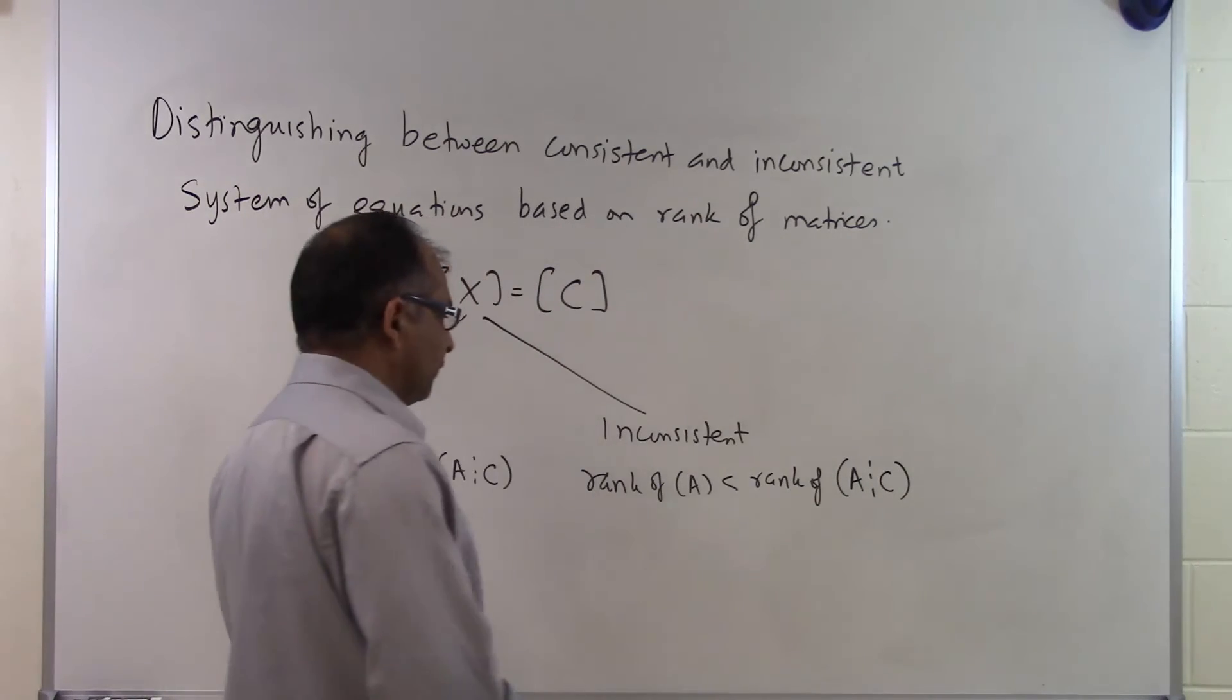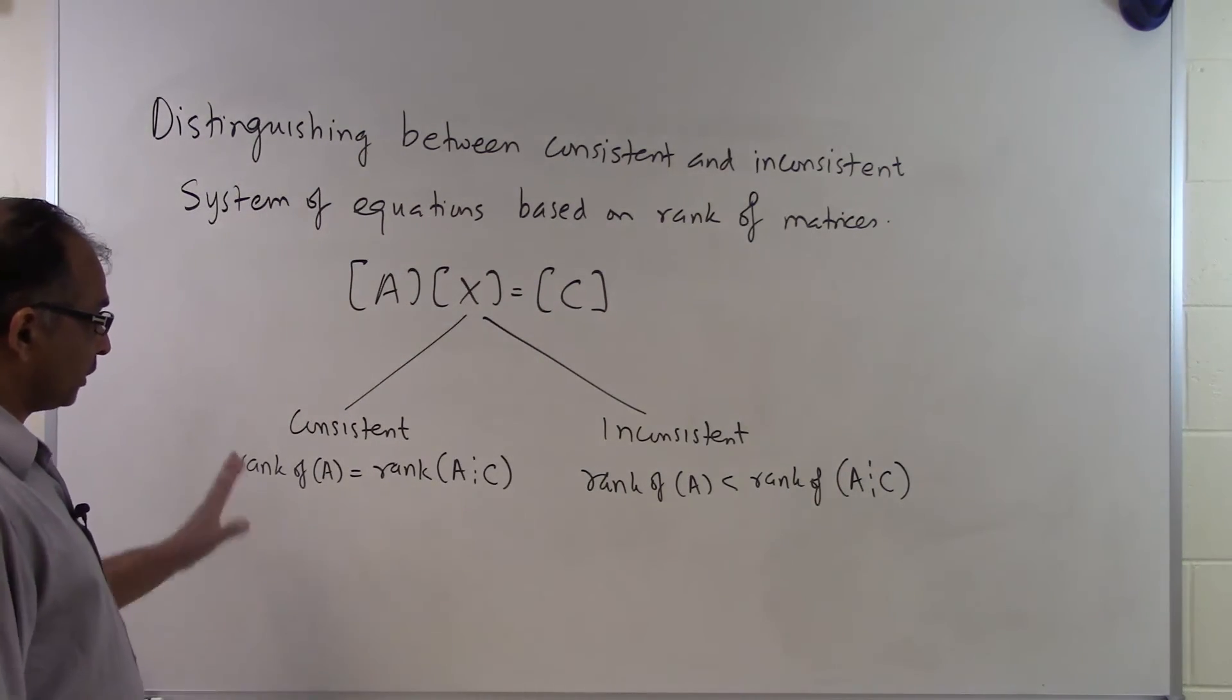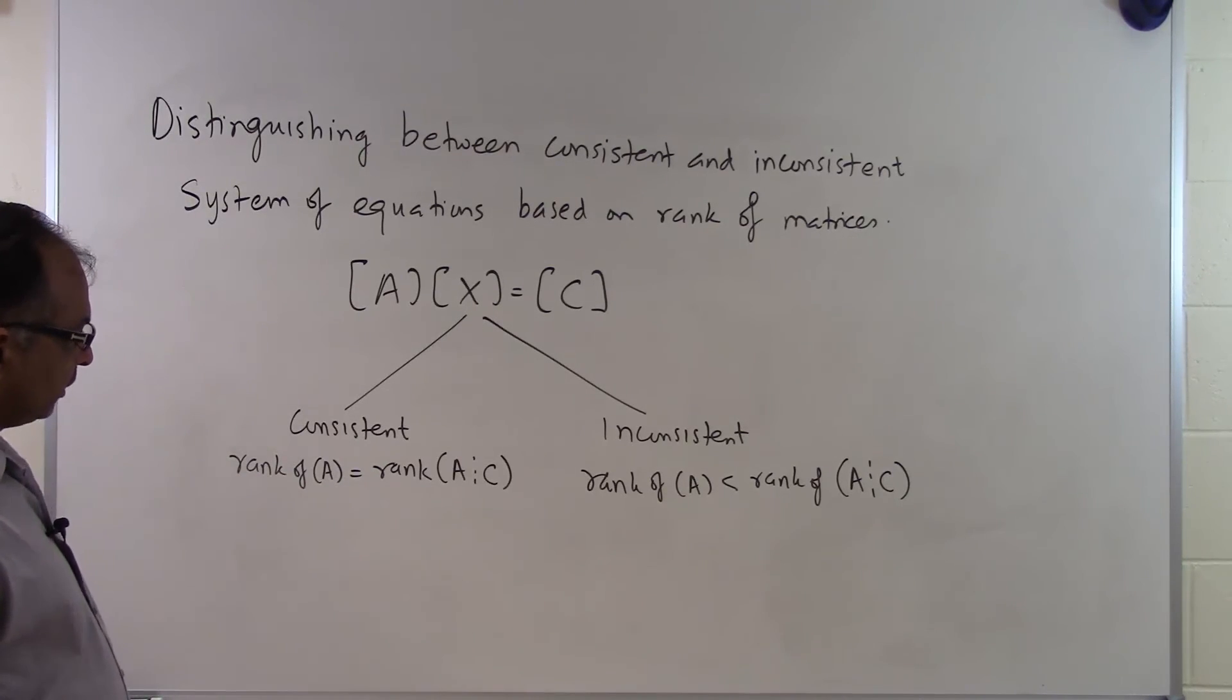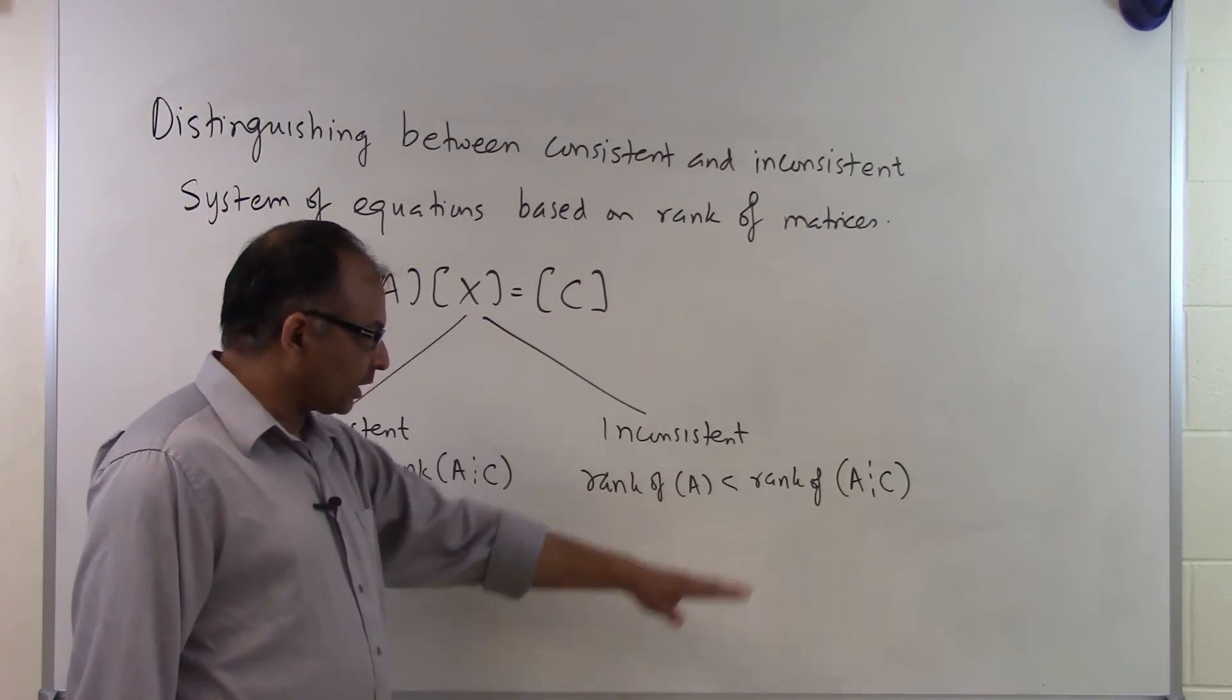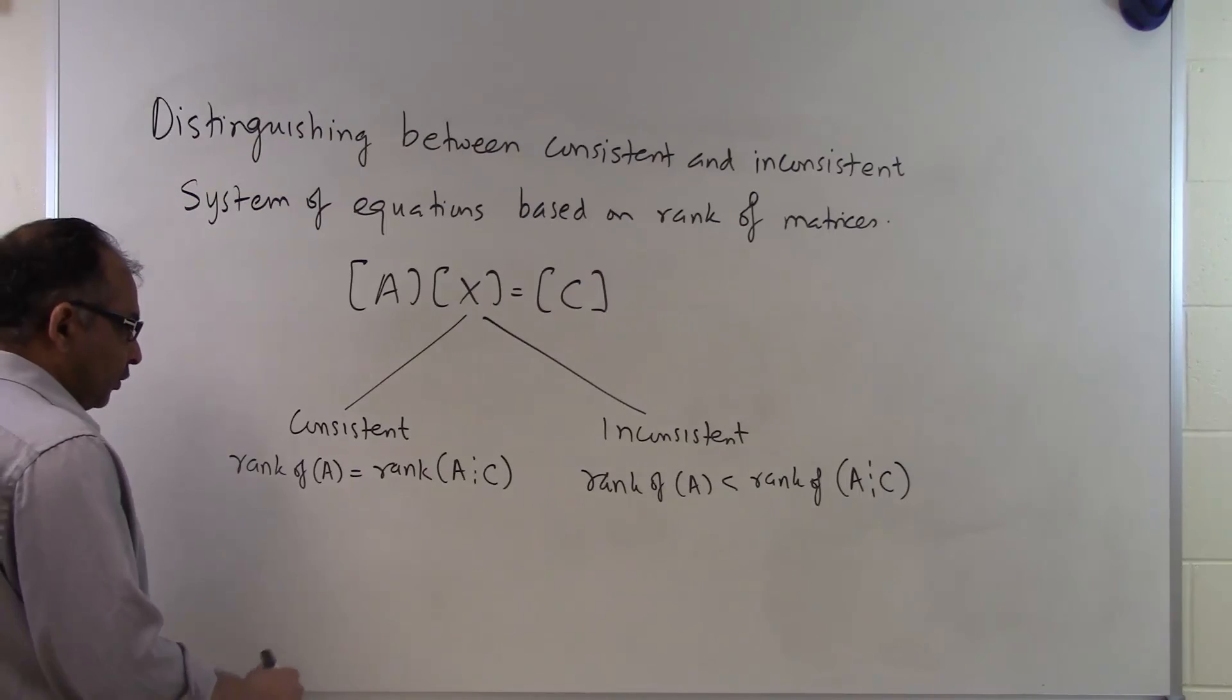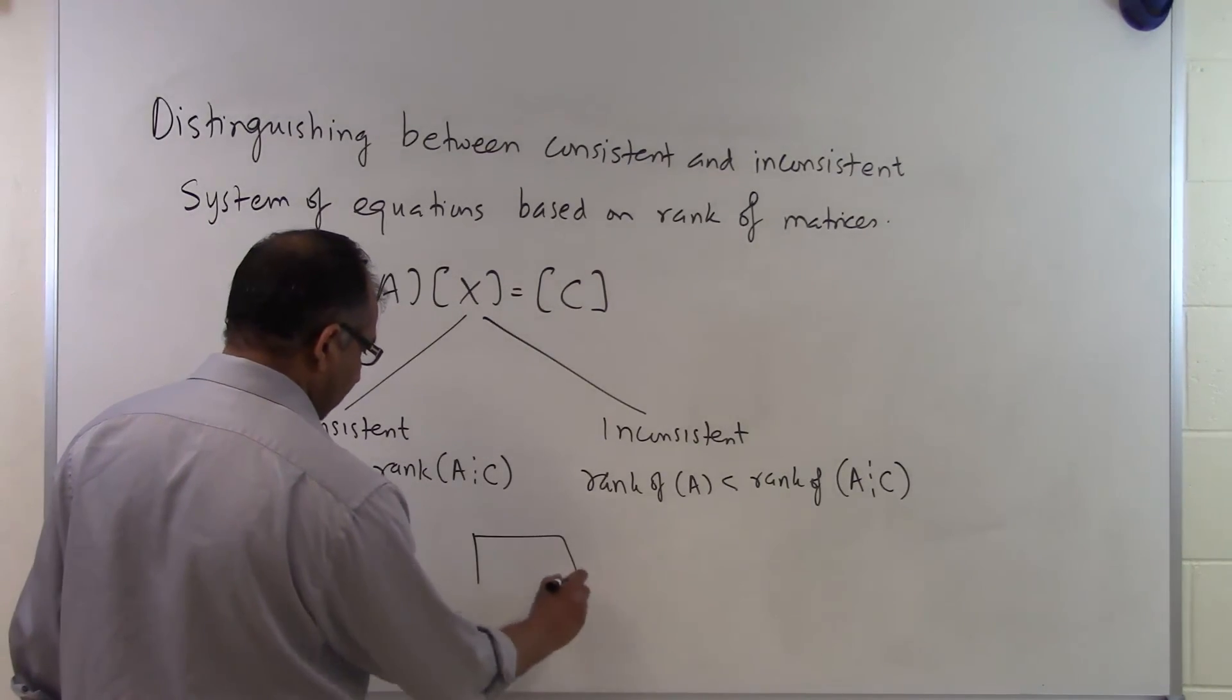So the procedure is very simple. If you want to figure out whether a particular system of equations is consistent or inconsistent, you calculate the rank of the coefficient matrix and the rank of the augmented matrix. If the two ranks are the same, then it is consistent. If the rank of the coefficient matrix is less than the rank of the augmented matrix, then it is inconsistent. We'll illustrate this phenomena through examples.